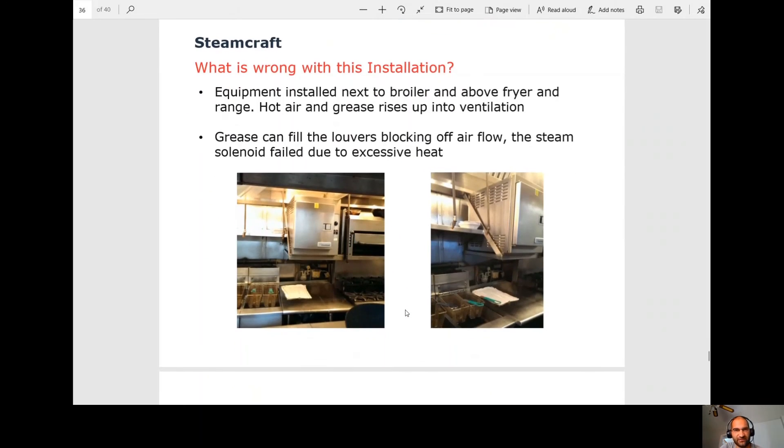So now let's go into some bad installations. So this one is right next to a fryer and a salamander, and then also the grill on the bottom. So what happens is grease can fill the louvers, blocking airflow. As we know, airflow is very important for electrical components. In this case, the steam solenoid failed because of too much heat in here. So this would be an incorrect installation. There are clearances that we need to follow.